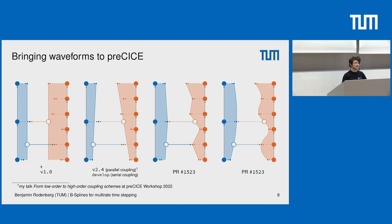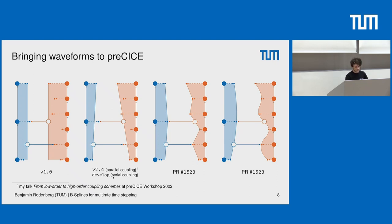This is basically our version-one approach in preCICE: just exchanging constant functions. This is what we evaluated in the paper results I just showed. It's already released with preCICE version 2.4 for parallel coupling. Due to some technicalities related to initialization of data, we only released it for serial coupling in version 3. What I'm currently developing is the ability to exchange samples in between and perform piecewise linear interpolation or even P-spline interpolation.